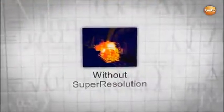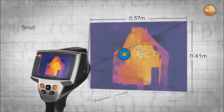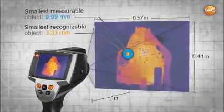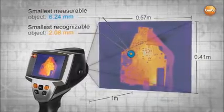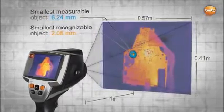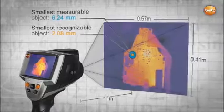The super-resolution technology leads to more meaningful thermal images. But that's not all. As your smallest measurable object decreases in size, you are still able to detect more details while maintaining the same distance to your measured object.